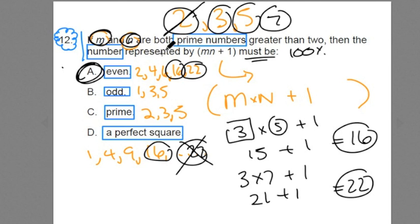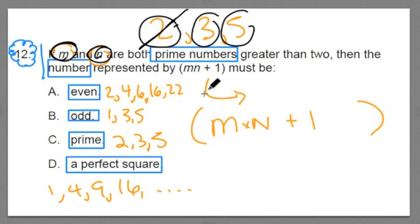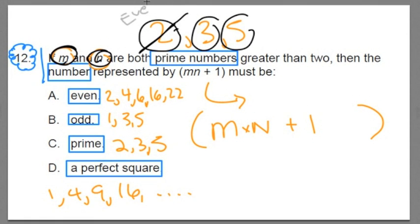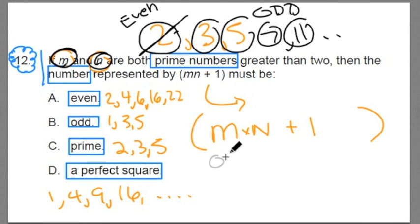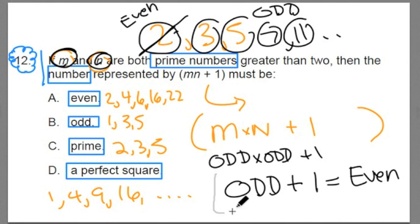Because we're going to go back to numbers and number sense for a moment. m and n are prime numbers greater than 2. 2 is the only even prime number, general number sense knowledge, which means 3 and 5 and 7 and 11 and so on are all odd. Which means m and n are going to be 2 odd numbers. And an odd times an odd always gets you an odd number. Is that right? And an odd number plus 1 always gets you an even value.